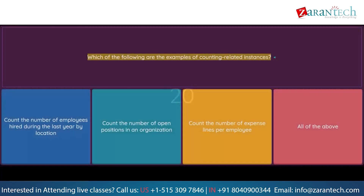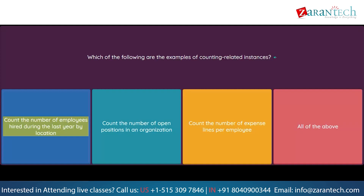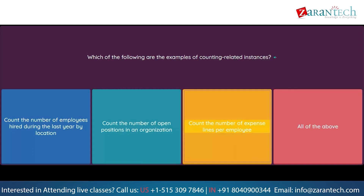Question: Which of the following are the examples of counting related instances? Option 1: Count the number of employees hired during the last year by location. Option 2: Count the number of open positions in an organization. Option 3: Count the number of expense lines per employee. Option 4: All of the above.